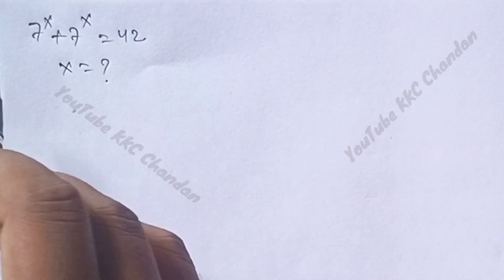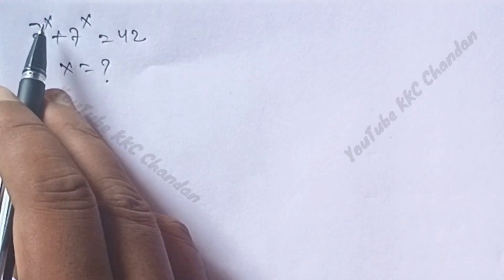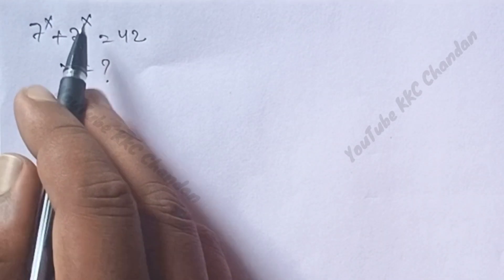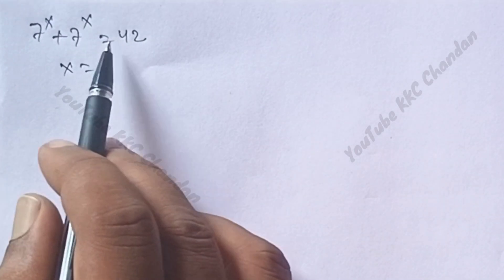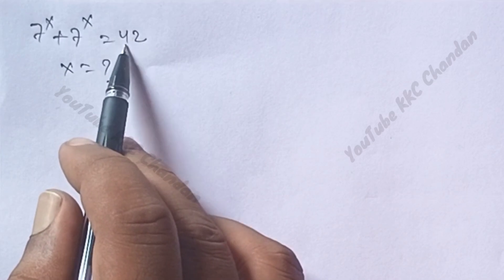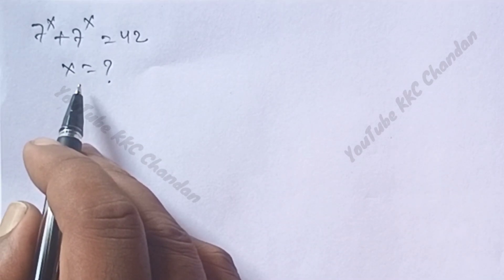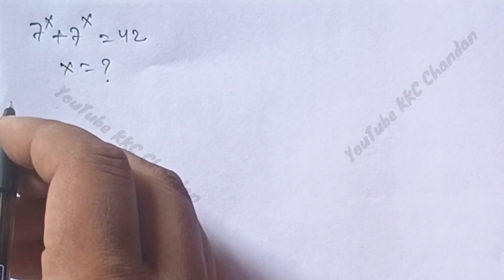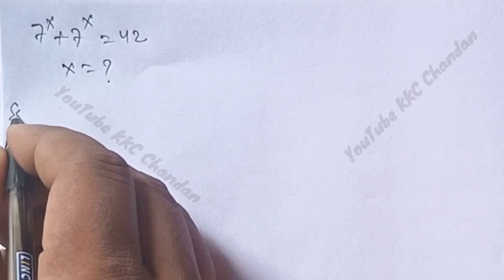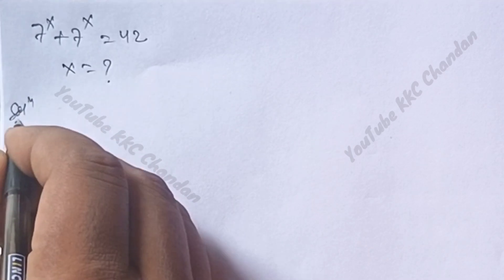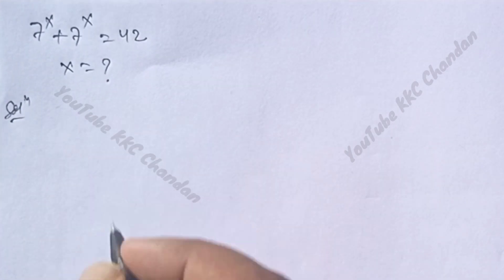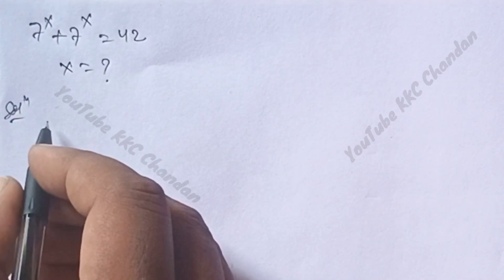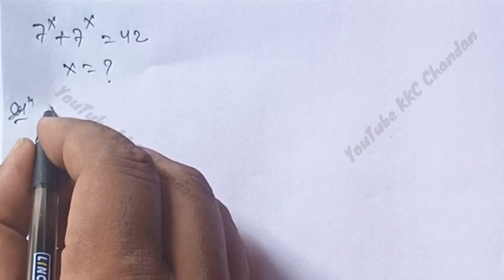A question is given: 7 power x plus 7 power x is equal to 42. What is the value of x? Let's start the solution.